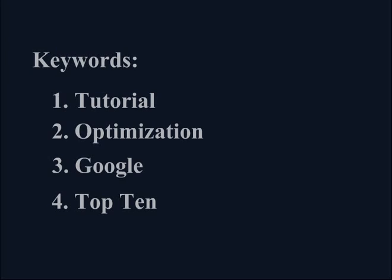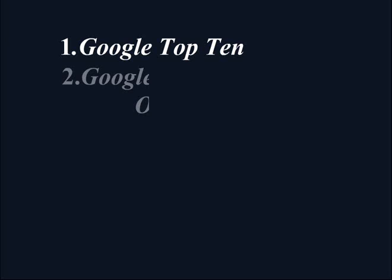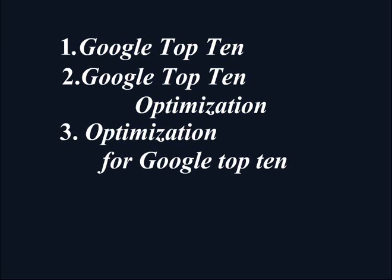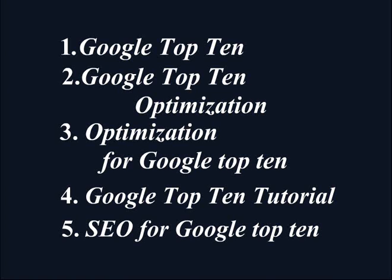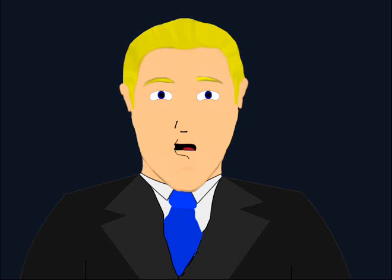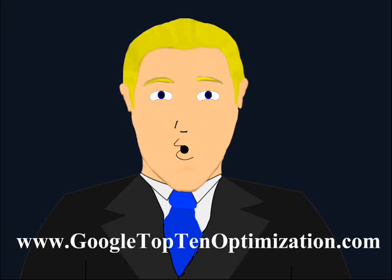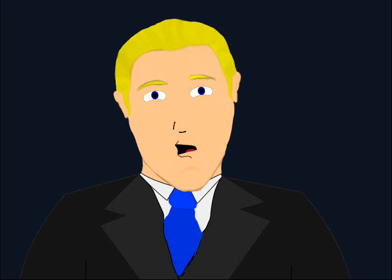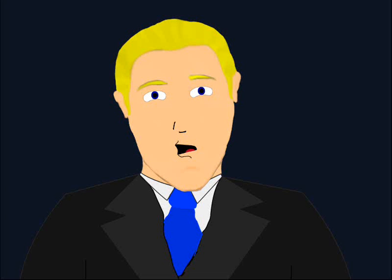I then figure people will search for my product in one of the following ways. At the end, I came up with the domain www.googletop10optimization.com, which consists of most of my keywords, which I found to be among the most searched phrases. You should also come up with a domain for your website which consists of maximum keywords and the most searched phrases based on your products.